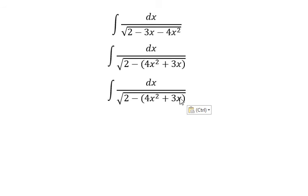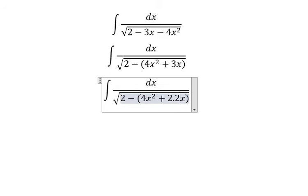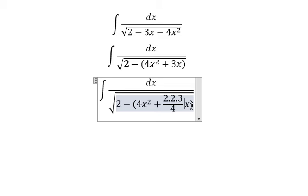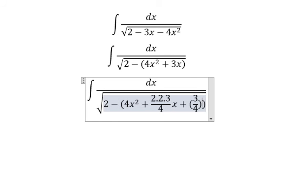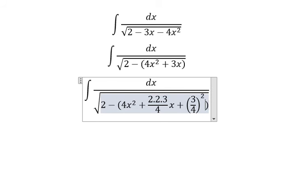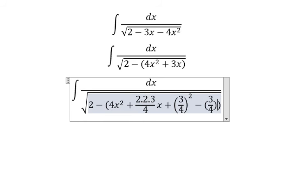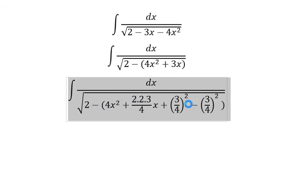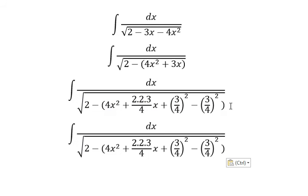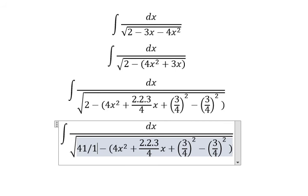Next we need 2 times 2 times 3/4. That means we need 3/4 squared. We minus 3/4 squared; this has negative negative, and we sum with 2, giving us 41 over 16.